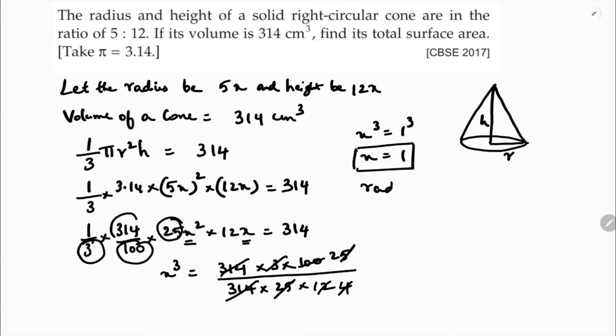So now radius is 5x, so 5 times 1 is 5 centimeters. And height is 12x, 12 times 1 which is 12 centimeters.